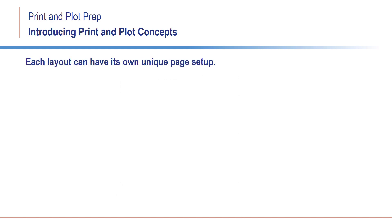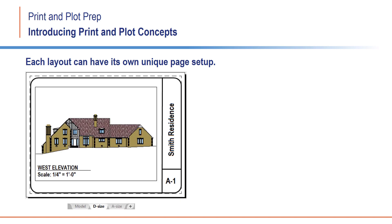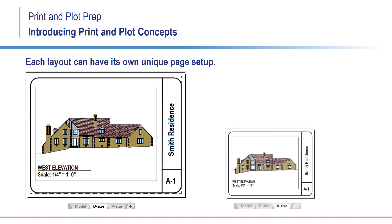Each layout can have its own unique page setup. For example, you could create one layout representing a drawing to print on a D-sized sheet, with a viewport showing a building elevation at a scale of 1 quarter inch equals 1 foot, and a second layout representing a drawing to print on an A-sized sheet, with a viewport showing the same building elevation at a scale of 1 eighth inch equals 1 foot.